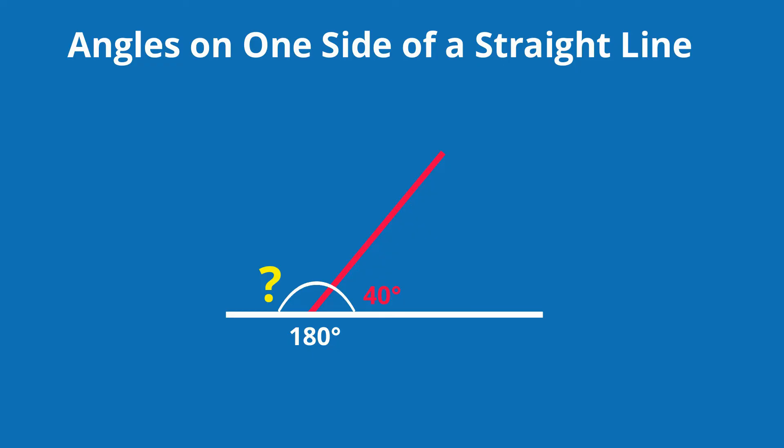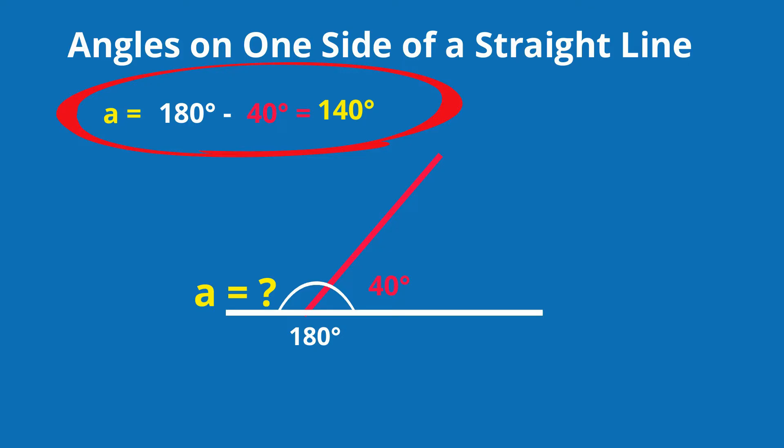For example, if one angle is 40 degrees, we know that the other angle is 140 degrees. Angle A is 180 minus 40 degrees,